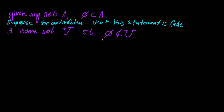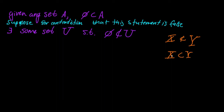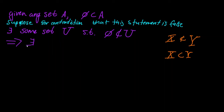What does it mean for a set to not be a subset of U? Well, if I have a set X that is not a subset of a set Y, there exists at least one element in X that is not also in Y. Because if X is a subset of Y, every element in X is also in Y. So, for the empty set to not be a subset of U, this implies there exists an x in the empty set such that x is not in U.